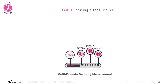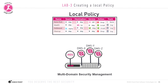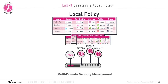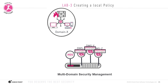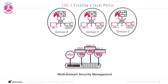Now in Lab 3, in this lab, we will create a local policy with local rules, and then we'll assign the local rules to the local security gateways. These local policies will be created for all three domains. The policy will pretty much be the same security policy for all three domains, with only a few minor exceptions. We will then install each local security policy onto each domain security gateway, respectively.